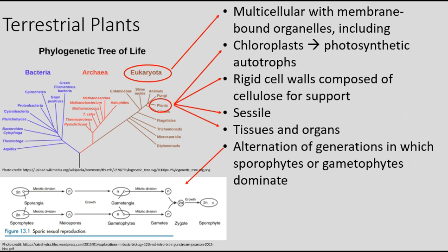Terrestrial plants are in the domain Eukarya. They are multicellular with membrane-bound organelles, including chloroplasts, which are unique to photosynthetic autotrophs that produce organic molecules from the sun's energy. Plants also have rigid cell walls composed of cellulose for support.